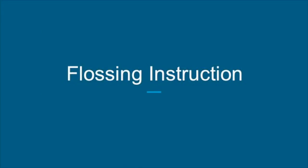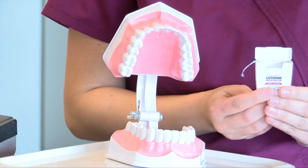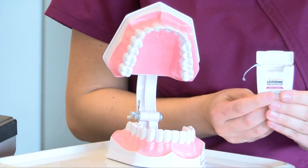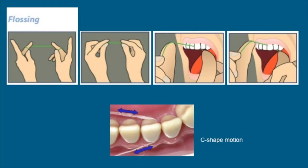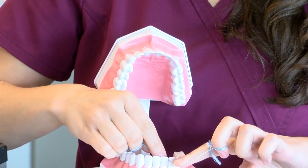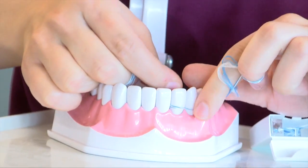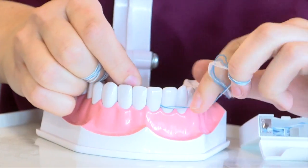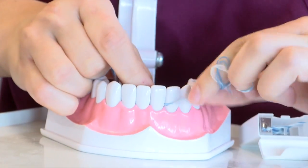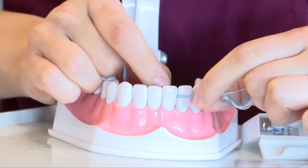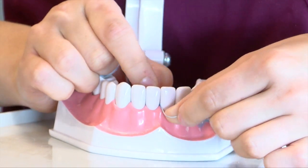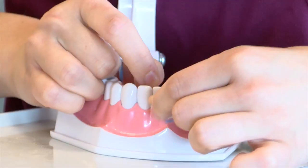Another important part of plaque removal is flossing. Brushing alone can only clean the front and back surfaces of the teeth. The side surfaces in between teeth and the underlying gum tissue are cleaned using floss. To begin, wind about eighteen inches of floss around your middle fingers, allowing one finger to unwind a clean piece of floss and the other to wind the dirty piece after using. Next, use your thumb and index fingers to guide about one inch of floss between each tooth. Gently saw the floss between each tooth, then curve into a C shape around one side of the tooth and then the other, allowing the floss to gently slide underneath the gum tissue. Continue sliding the floss up and down and around each tooth, and repeat until all teeth on the upper and lower jaw are completed.